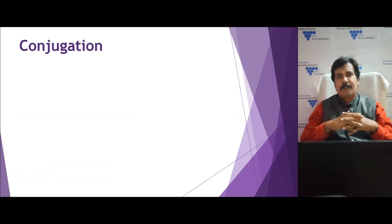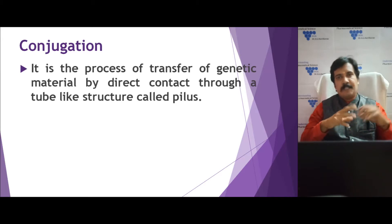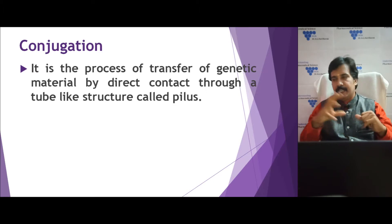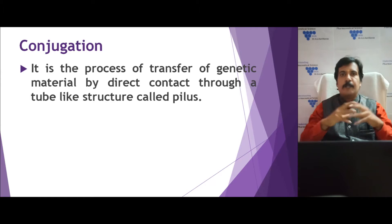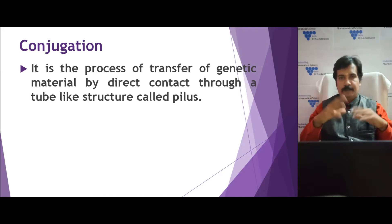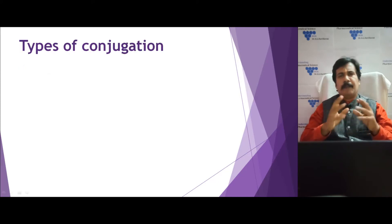First, let us understand what is meant by conjugation. Conjugation is a process in which genetic transfer happens between two bacteria — a donor bacterial cell transfers its genetic material to a recipient bacterium with the help of a tube-like structure called pili. In this process, genetic transfer happens by direct contact only.